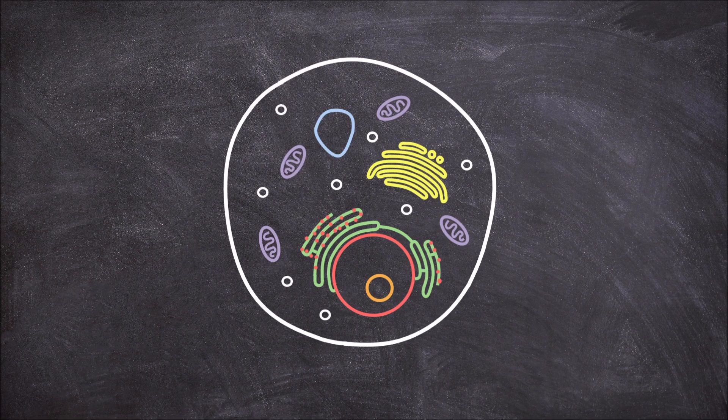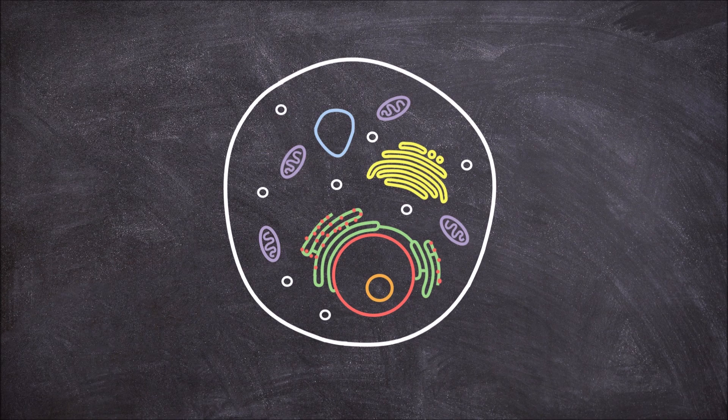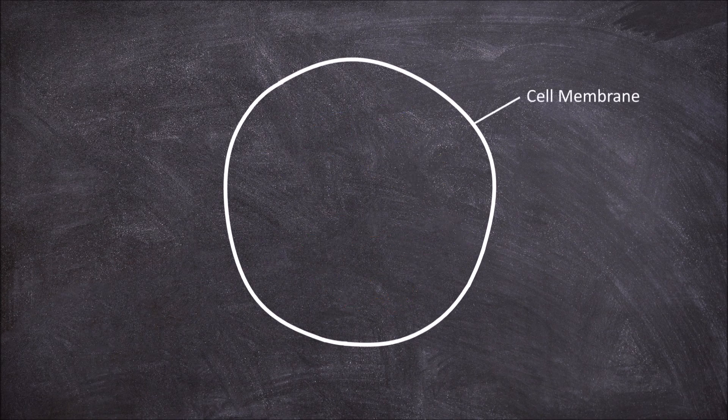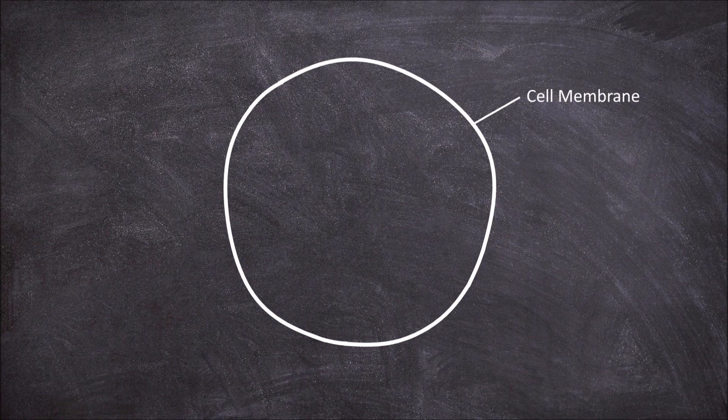In this video we are going to talk about the basic structure of an animal cell. The animal cell consists of a cell membrane. The cell membrane gives the cell its shape and is also involved in controlling what can move in and out of the cell.